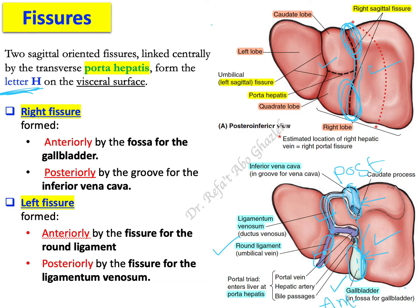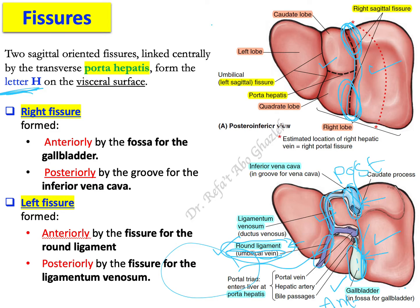What is the round ligament? This ligament is a fibrous remnant of the umbilical vein. It was the umbilical vein, but after birth there is no need for it. Its function was to carry oxygenated and nutrient-rich blood from the placenta to the fetus. After birth, it becomes obliterated and closed, forming the round ligament.